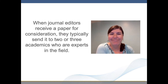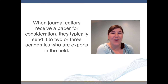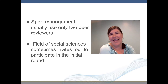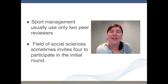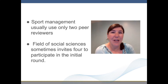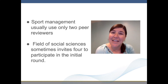How many peer reviewers? Usually the journal will send your paper to two or three academic experts in the field to serve as peer reviewers. For example, journals in the field of sports management usually use only two peer reviewers unless the initial round of reviews raises differing opinions on the work, in which case additional reviewers may be used. By contrast, in the social sciences, sometimes four peer reviewers are invited to participate in the initial round.